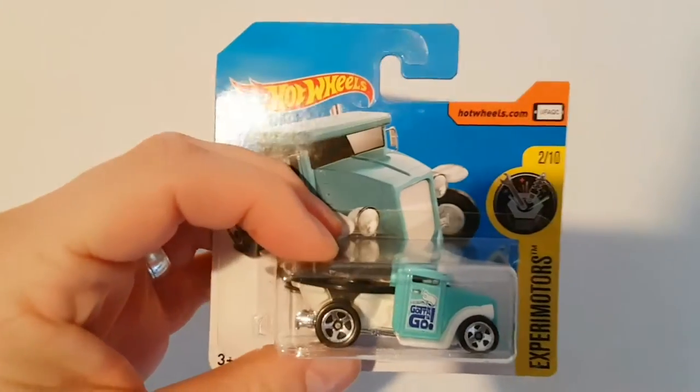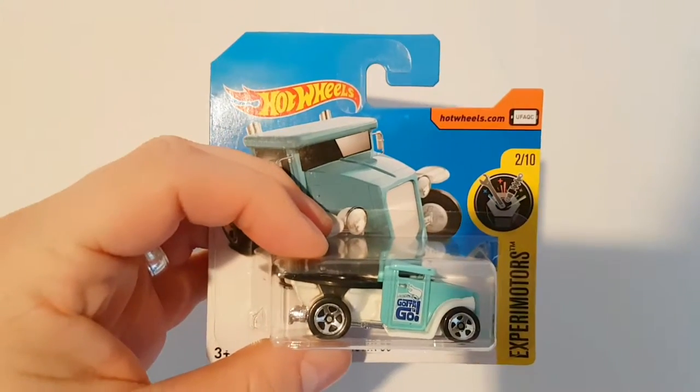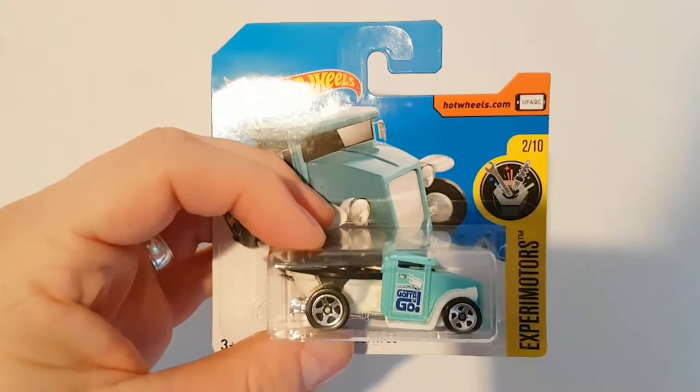So the actual model name of this little vehicle, as you can see under there, is the Gotta Go. Part of the Experimenters range.